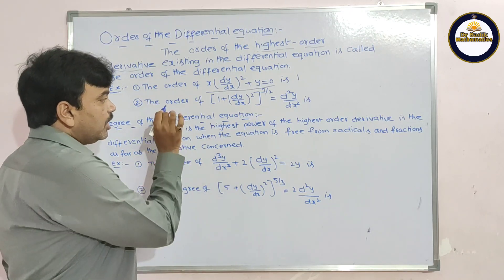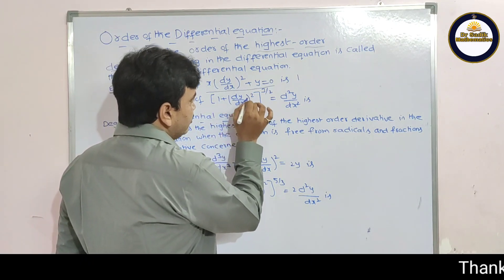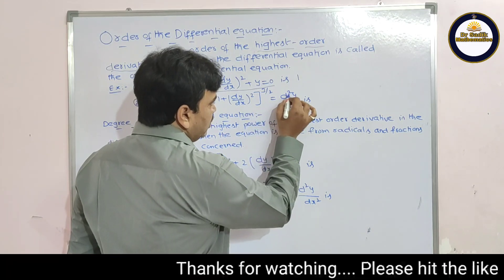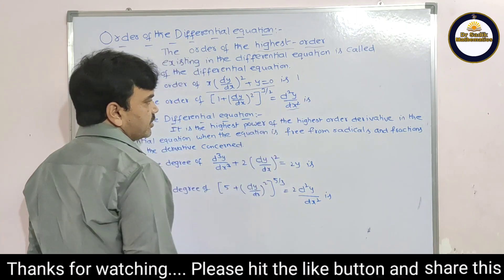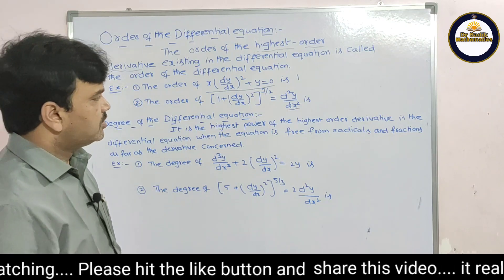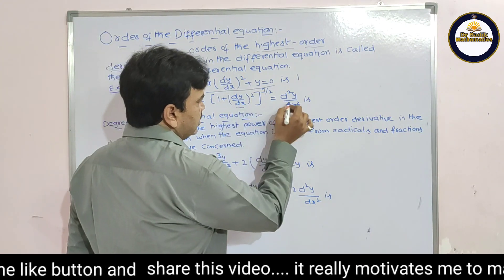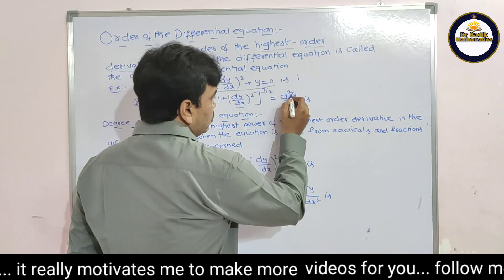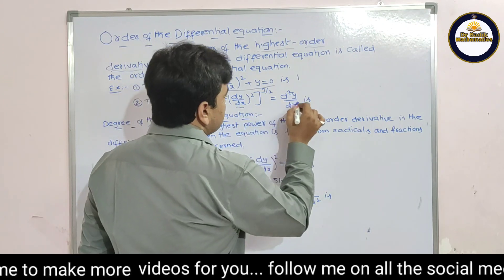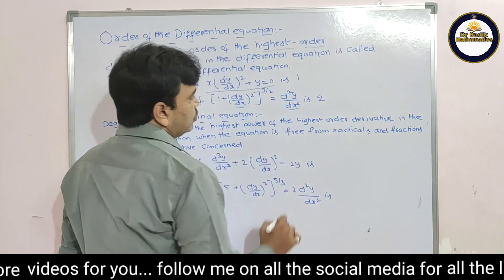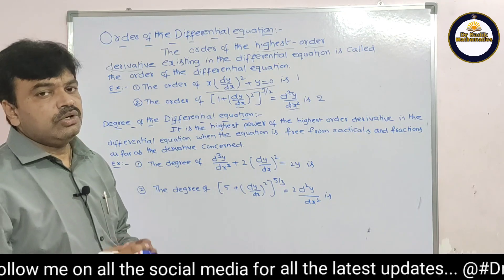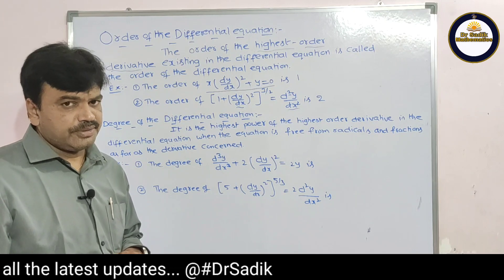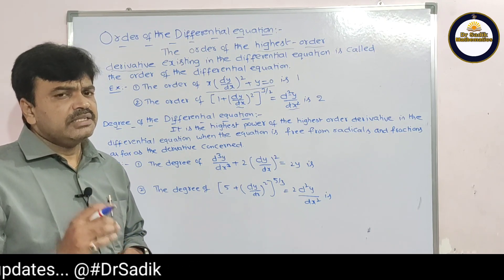The second example: the order of (1 + (dy/dx)²)^(3/2) = d²y/dx². In this equation we have dy/dx and d²y/dx². The highest order is 2, so the order of this differential equation is 2.